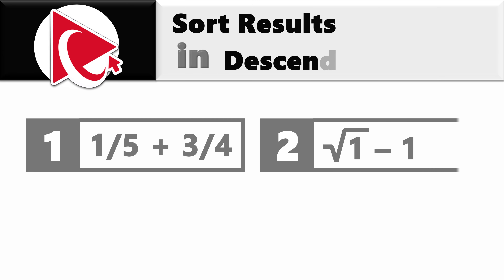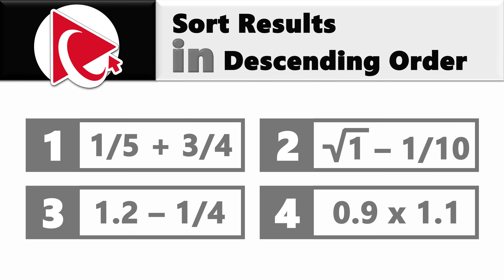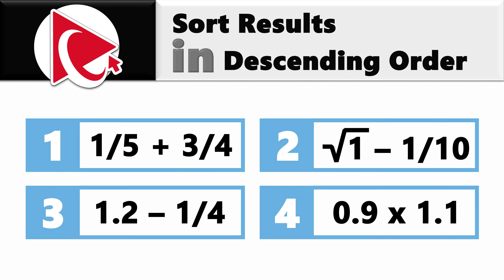You're presented with four expressions, and you need to sort the results of these expressions in descending order. The first expression is 1/5 plus 3/4. The second expression is the square root of 1 minus 1/10. The third expression is 1.2 minus 1/4. And the fourth expression is 0.9 multiplied by 1.1.